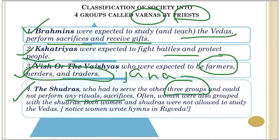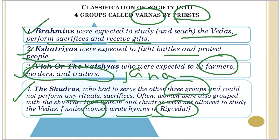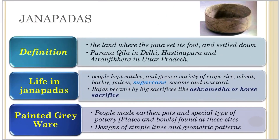Often women were also categorized into the Shudra group and were not allowed to study the Vedas. Notice an important change here: in the Rig Veda period women composed hymns and suktas, but now they were categorized into the Shudra category. This is an important change to keep in mind.